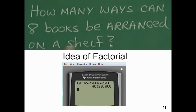How many ways can eight books be arranged on a shelf? You have eight choices for the first book, then seven for the second, six for the third, five, four, three, all the way down to one. That gives 40,320 different arrangements. The word 'arrangements' means order counts — one, two, three and three, two, one are counted as different arrangements. When you see the word arrangements, think of order counting.